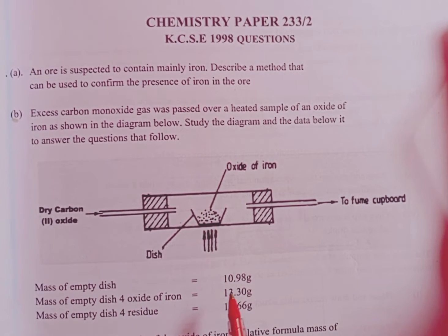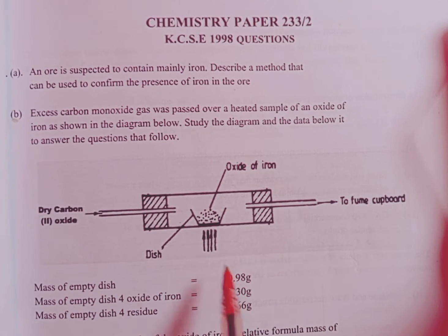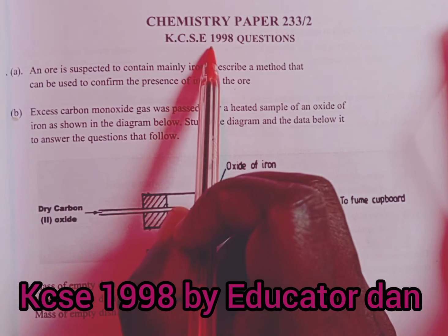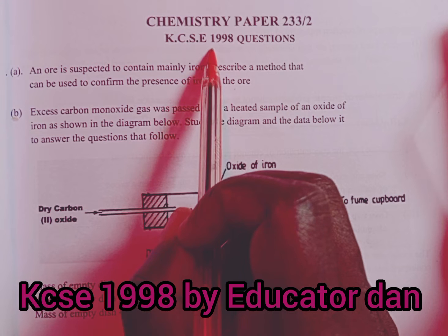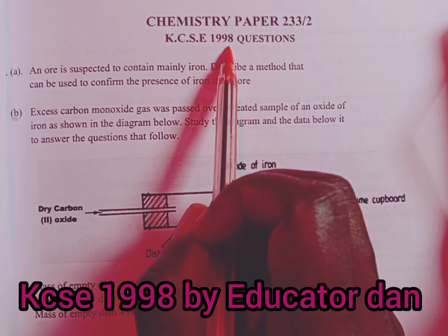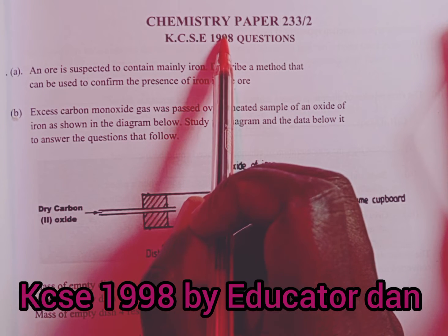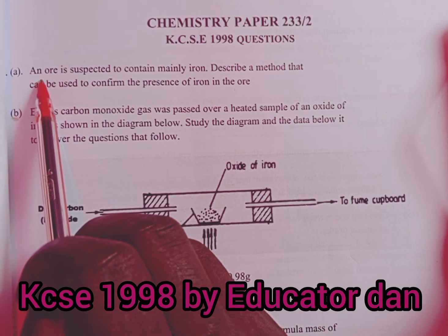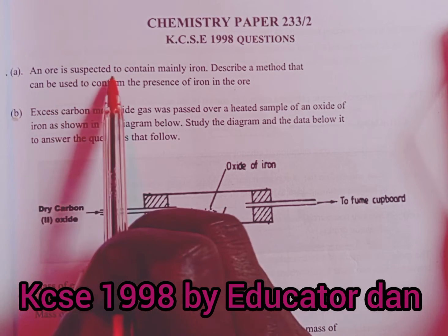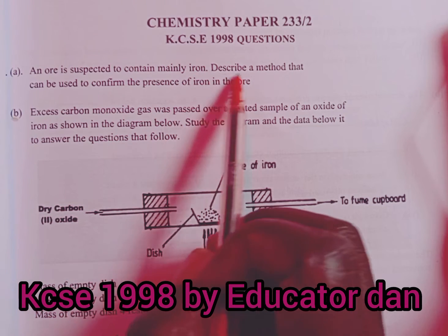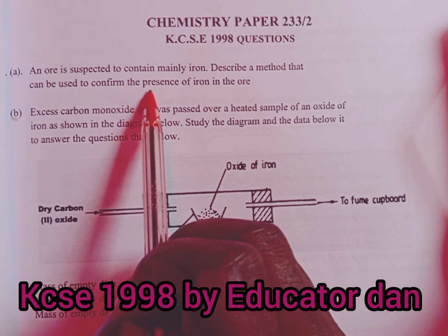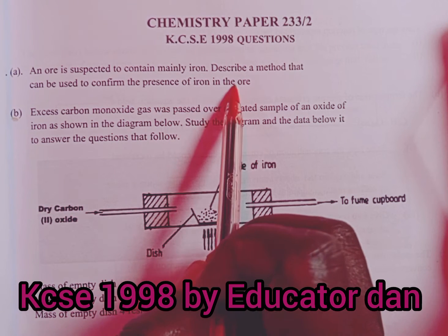Welcome to our discussions. We are presenting a question that was done in KCSE 1998, Chemistry Paper 2. The first part of the question reads: An ore is suspected to contain mainly iron, describe a method that can be used to confirm the presence of iron in the ore.